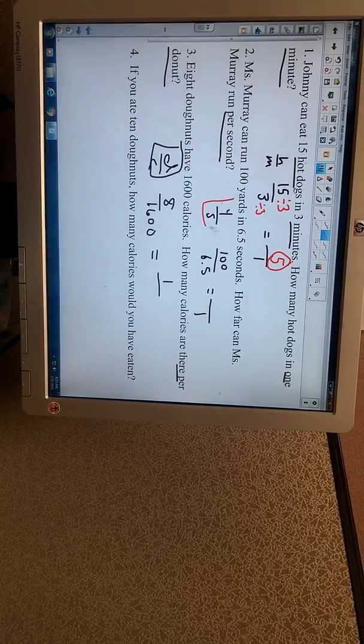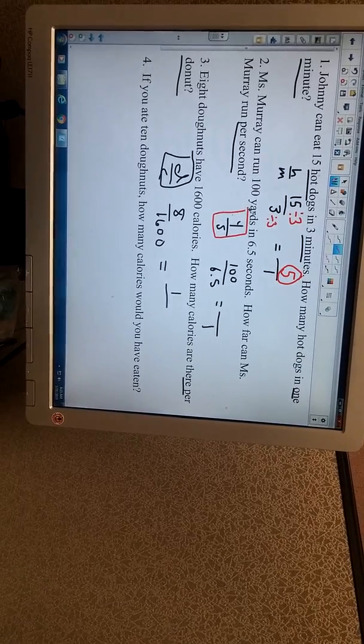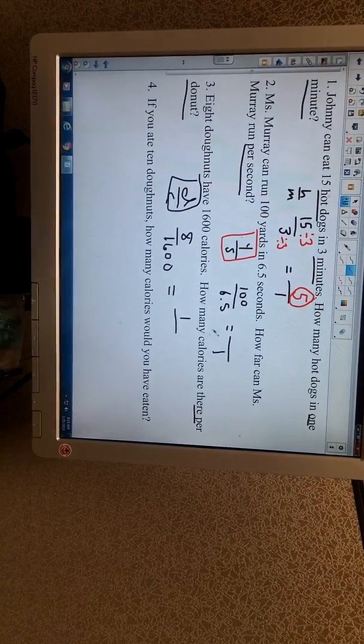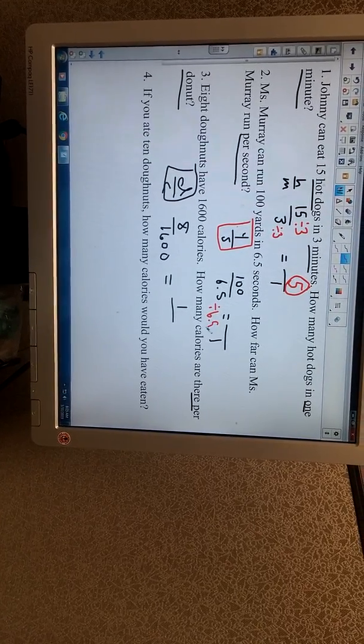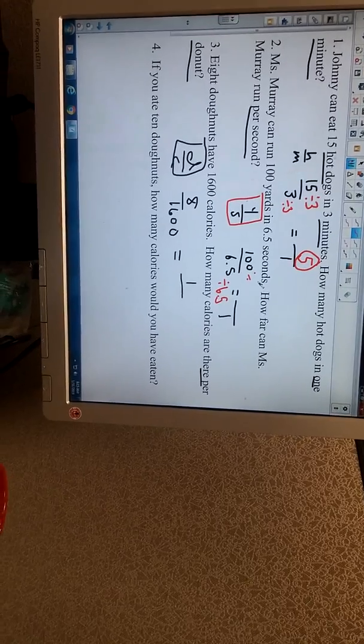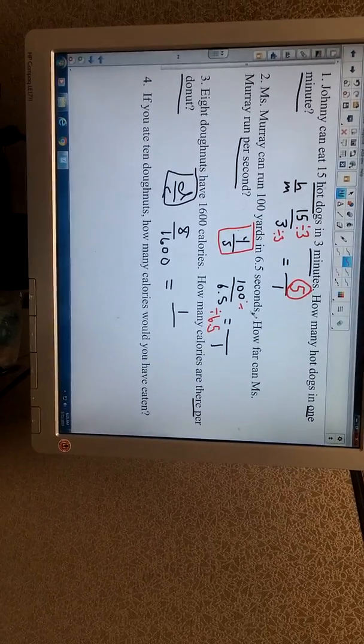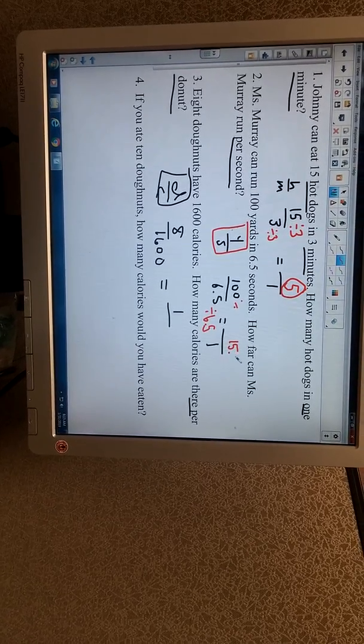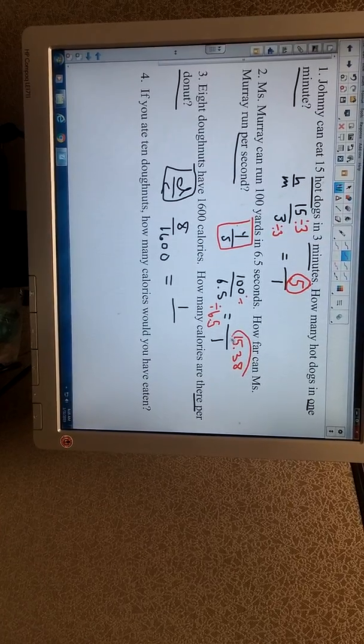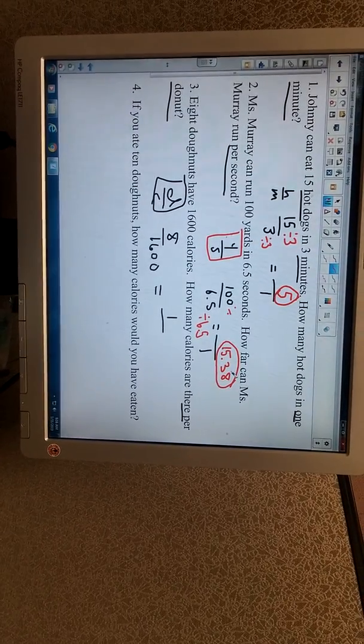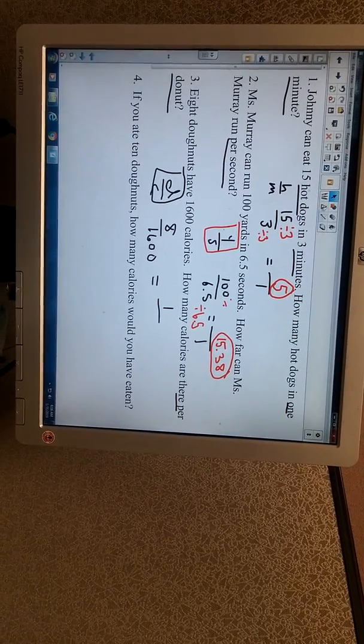In this one, Ms. Murray can run 100 yards in 6.5 seconds. That's what we're comparing, yards and seconds. You're definitely going to have to use a calculator here. To go from 6.5 to 1, you divide by 6.5, which means if we divide the denominator by 6.5, we also have to divide the numerator by 6.5. And 100 divided by 6.5 is going to give us 15.38 with a long string of decimals. I just rounded it to the hundredths place. That means she can run 15 yards per second, which is really, really fast.